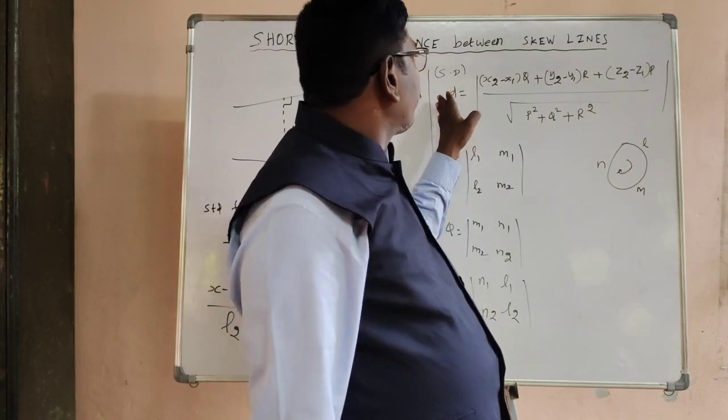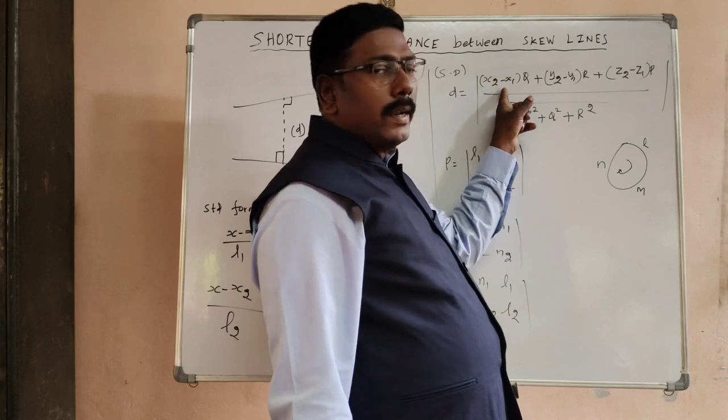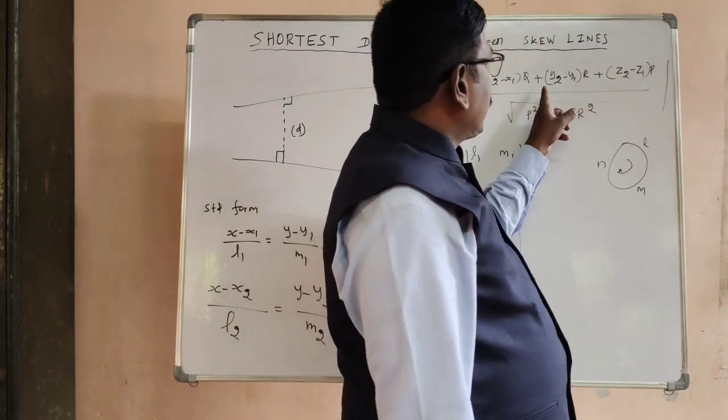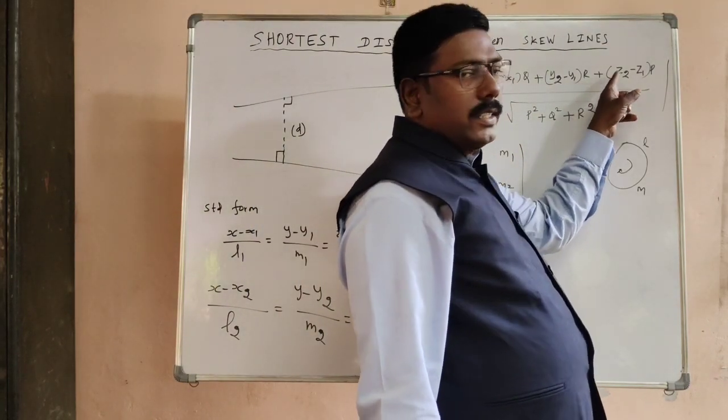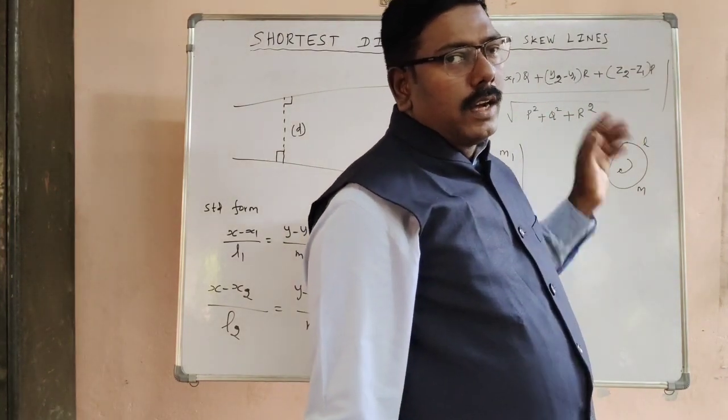The formula, the shortcut formula is: shortest distance D equals modulus value of x2 minus x1 into Q plus y2 minus y1 into R plus z2 minus z1 into P divided by root of P square plus Q square plus R square.